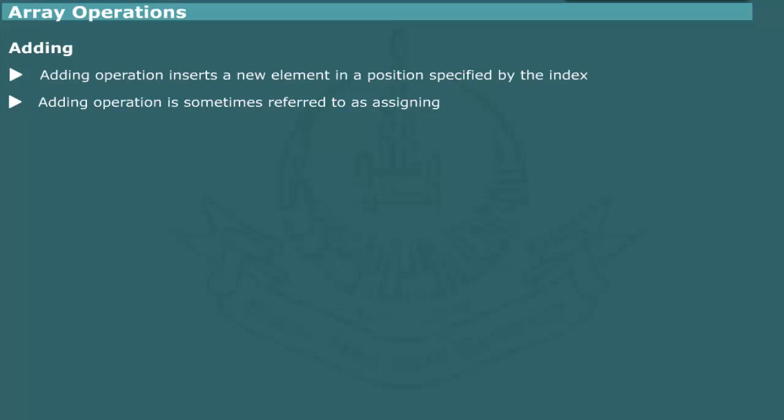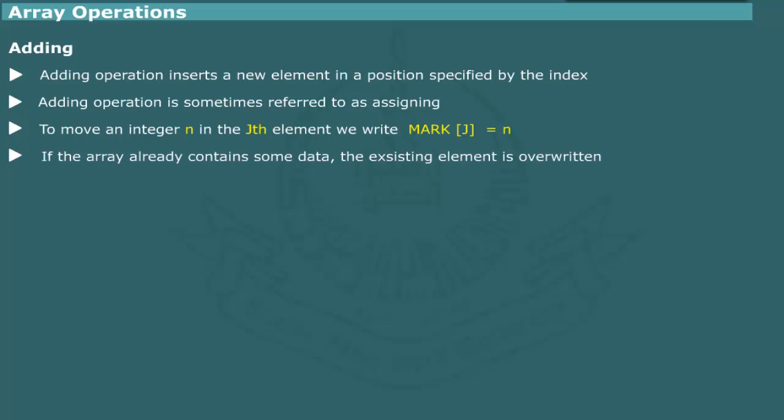Adding. The add operation places a new element in the array in a position specified by the index. It is also called assignment operation. Thus, if we want to move an integer n in the jth element of array mark, we simply write mark[j] = n. If the array already contains some element in the specified position, it is replaced by the new element. The add operation has time efficiency O(1).